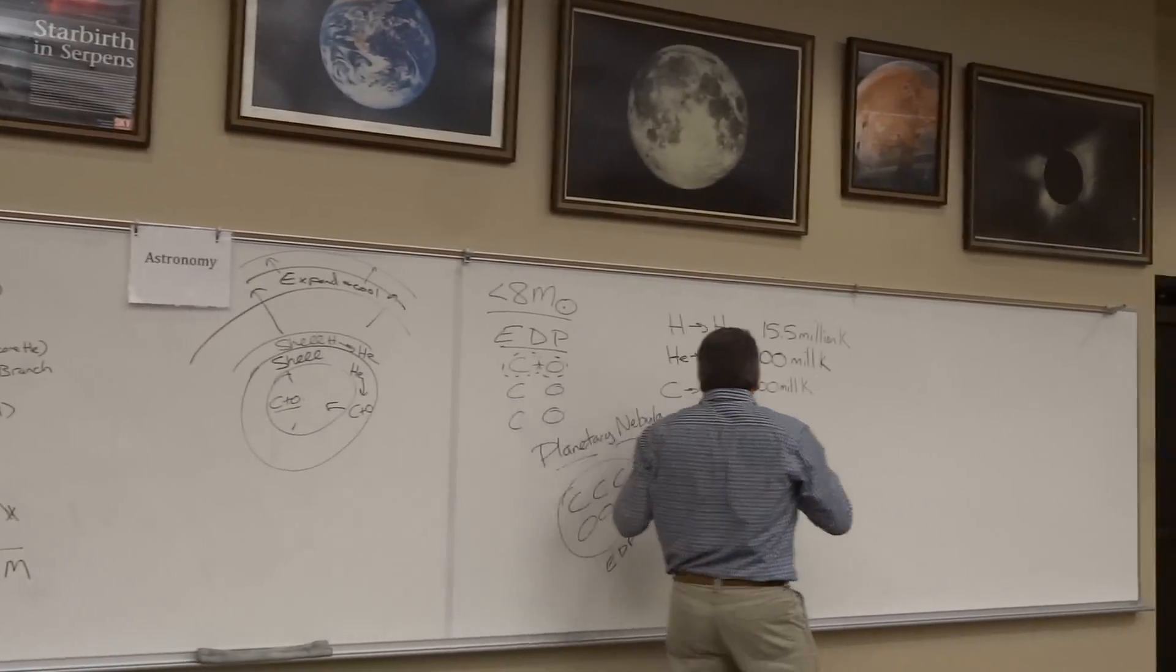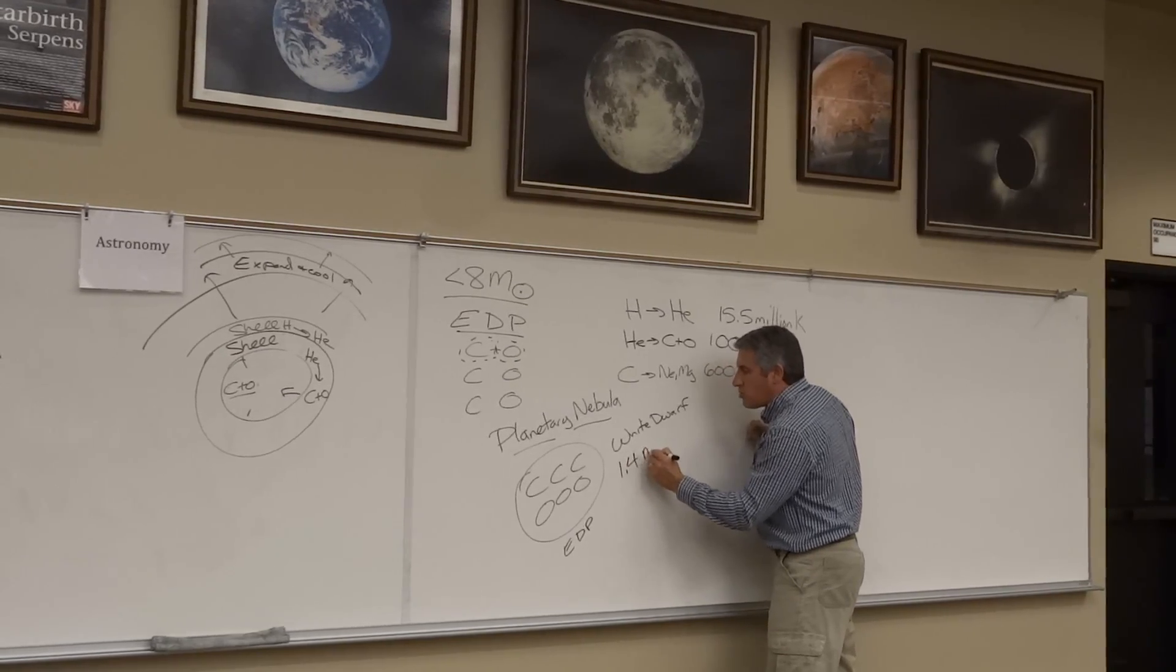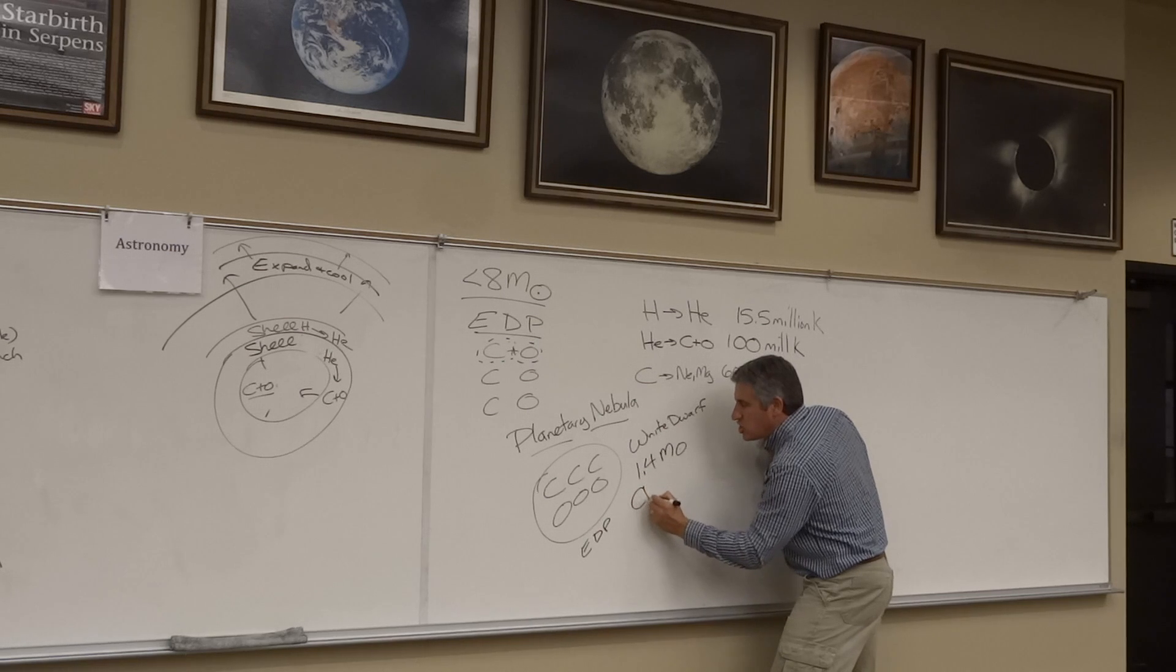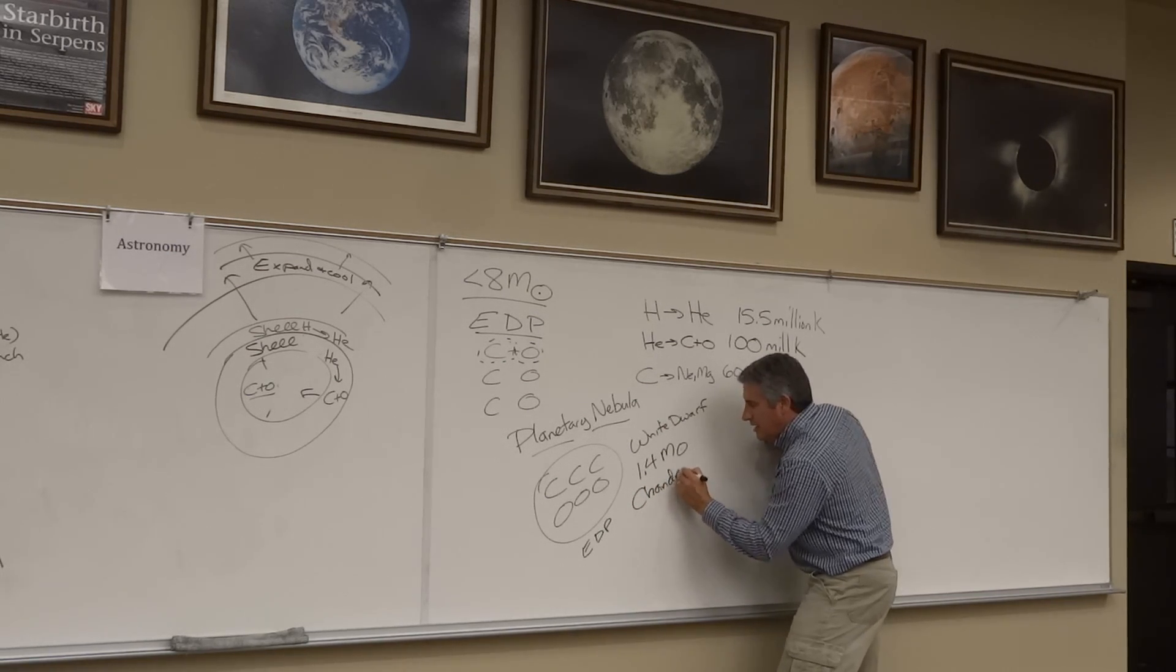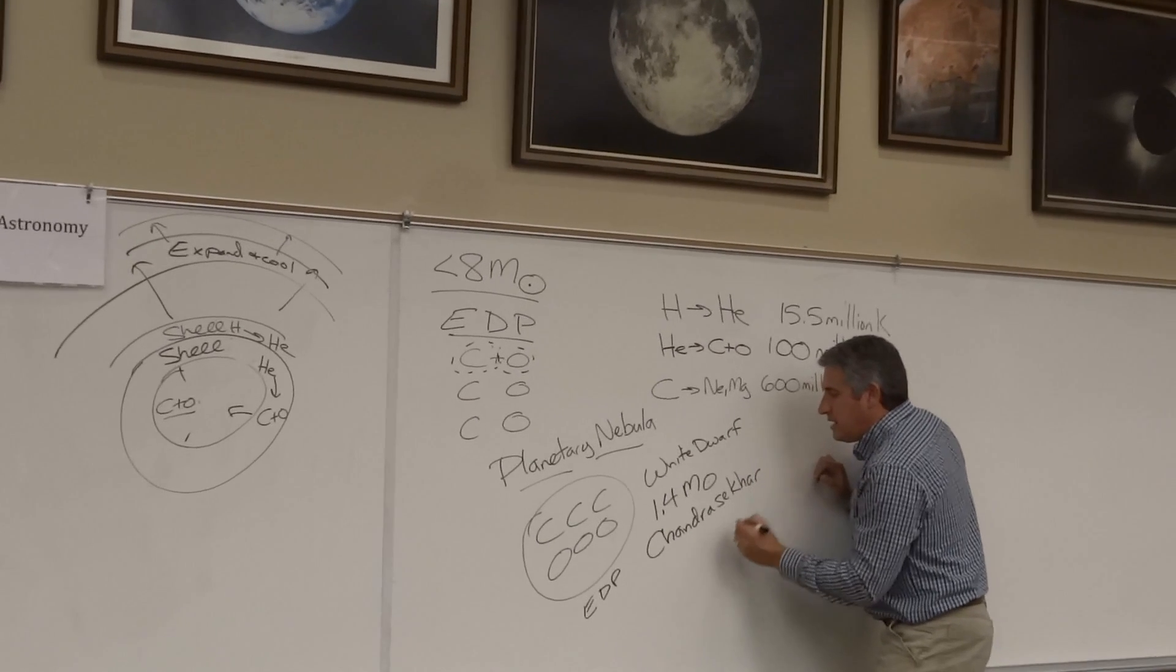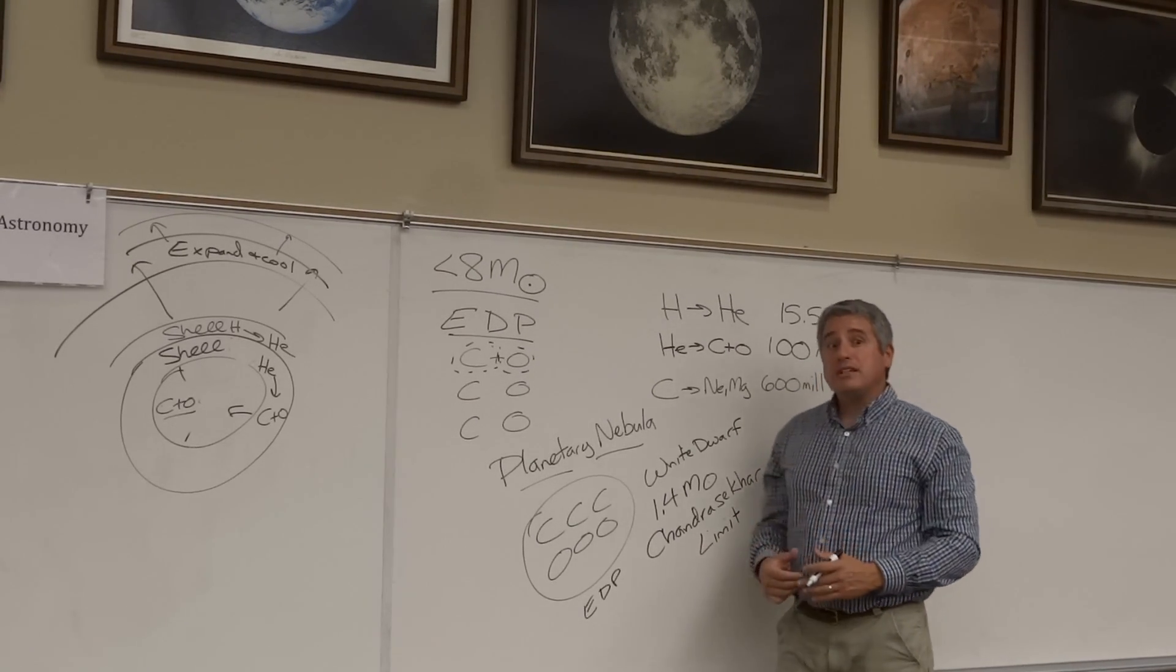In fact a white dwarf has a maximum size of about 1.4 solar masses. That's as much as it will leave behind. That's called the Chandrasekhar limit, named after the scientist from India who was able to calculate this and won the Nobel Prize for it.